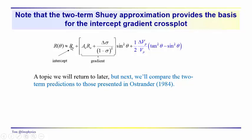I would just note that the two-term approximation is also often rewritten in this form, where we have the normal incidence reflection coefficient, which is an intercept, and then we have the gradient, which is this term over here. The two-term Shuey approximation has been used as the basis for this intercept gradient crossplot. We're going to add in this third term, and we'll compare the two- and three-term approximations to those presented in Ostrander 1984. Thanks for joining us and see you next time.